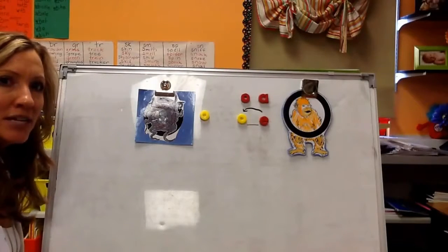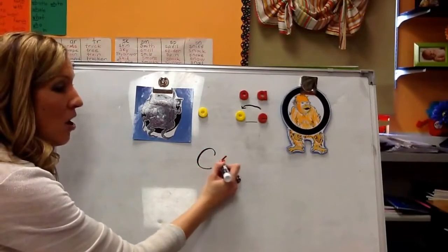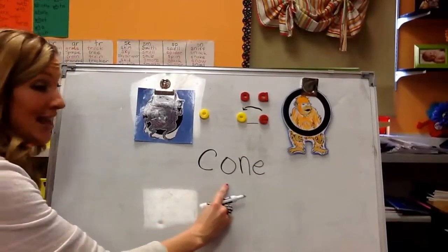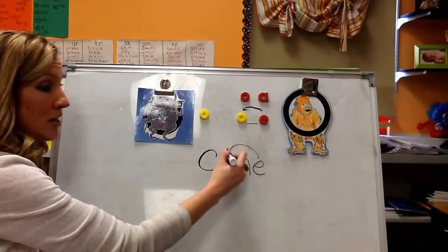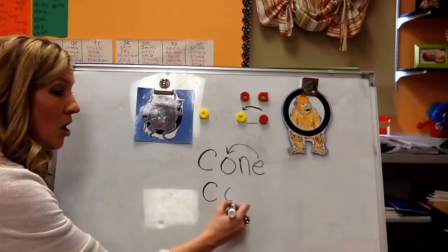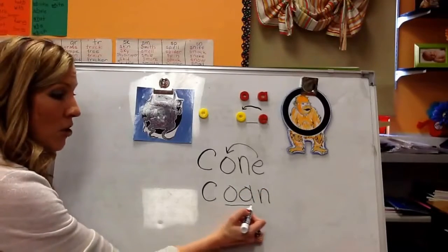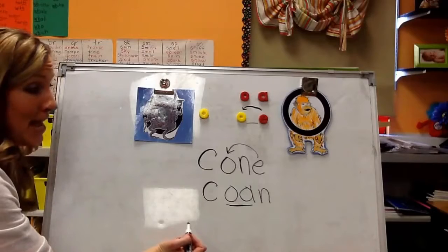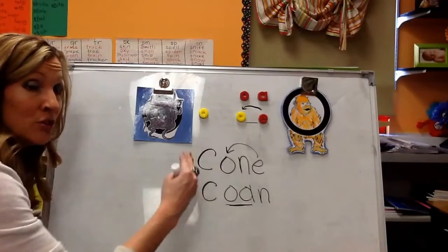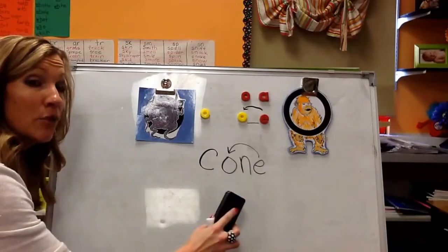So let me give you an example. If I'm going to write the word cone, I can write it like this with the E bossing the O around and making it say its name. Or we could have O-A making the O sound. But as a writer, I remembered that cone is going to be C-O-N-E. So I have to think, does it look right? And I think that C-O-N-E looks right for cone.